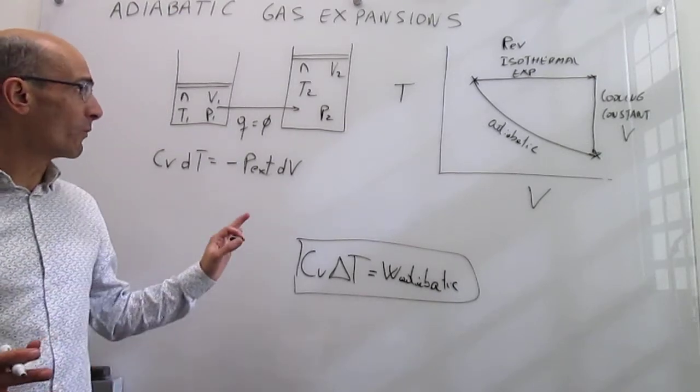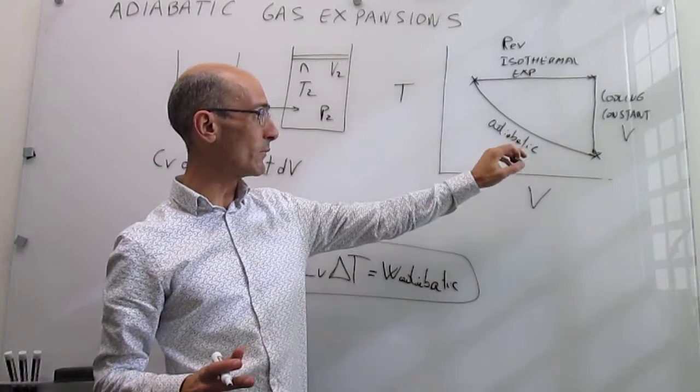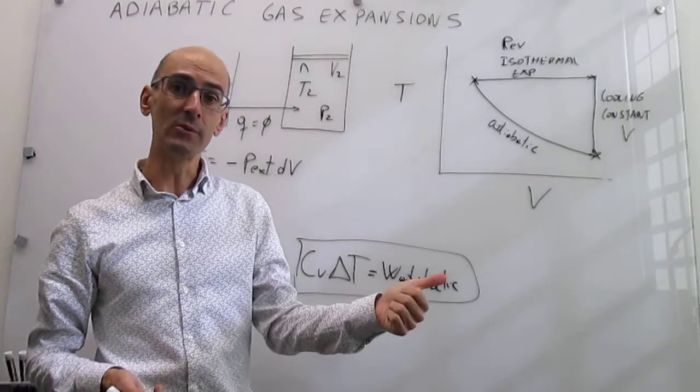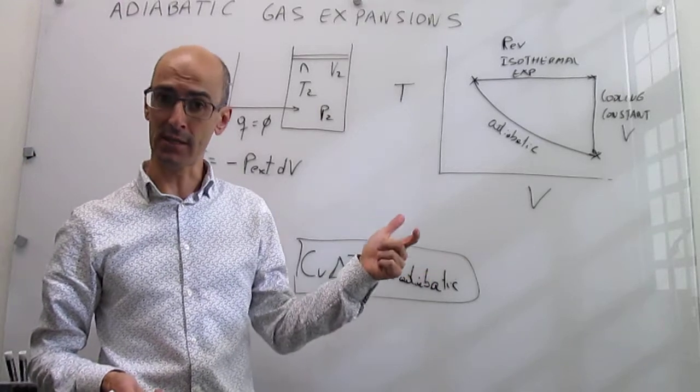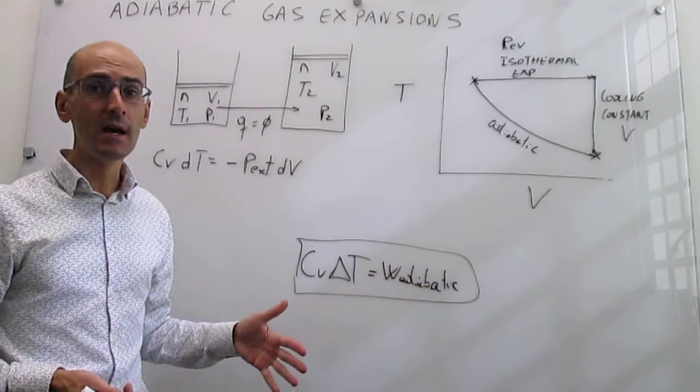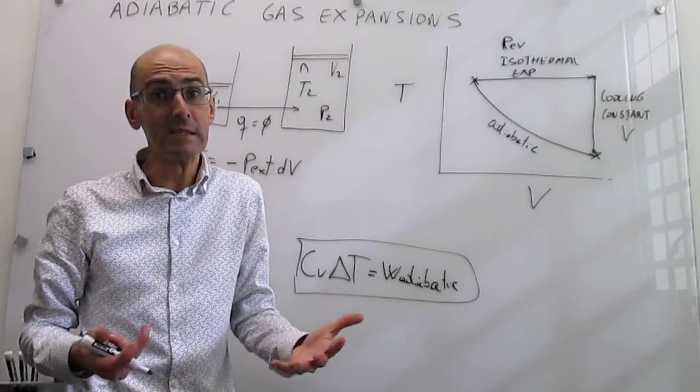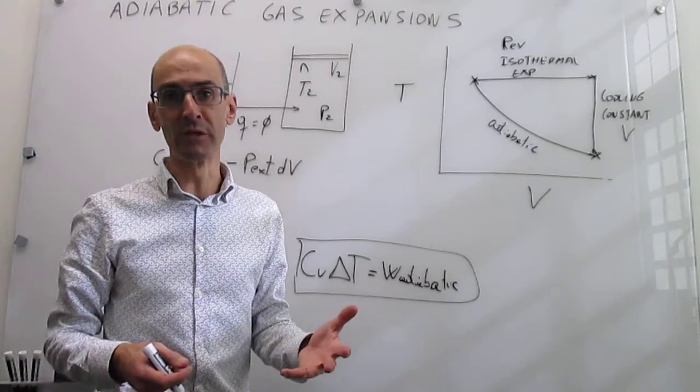Now what we actually have is a way to break down this adiabatic expansion into two processes: reversible isothermal expansion, and a cooling at constant volume. Our approximation has been, or our choice has been, that those processes would be reversible.